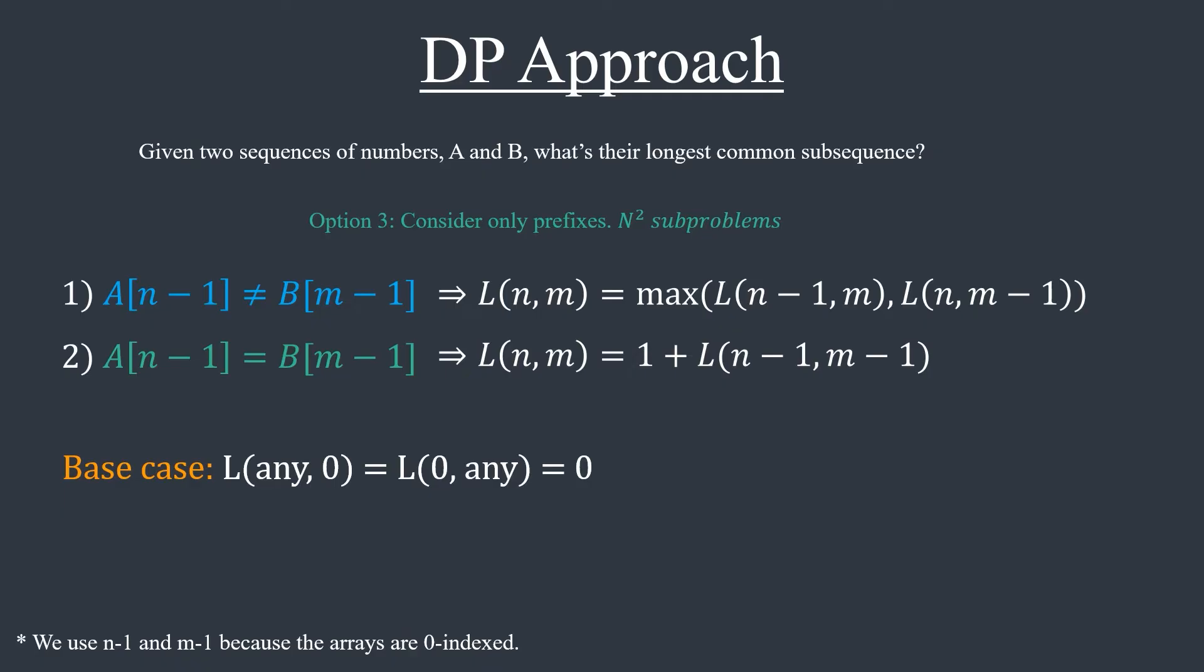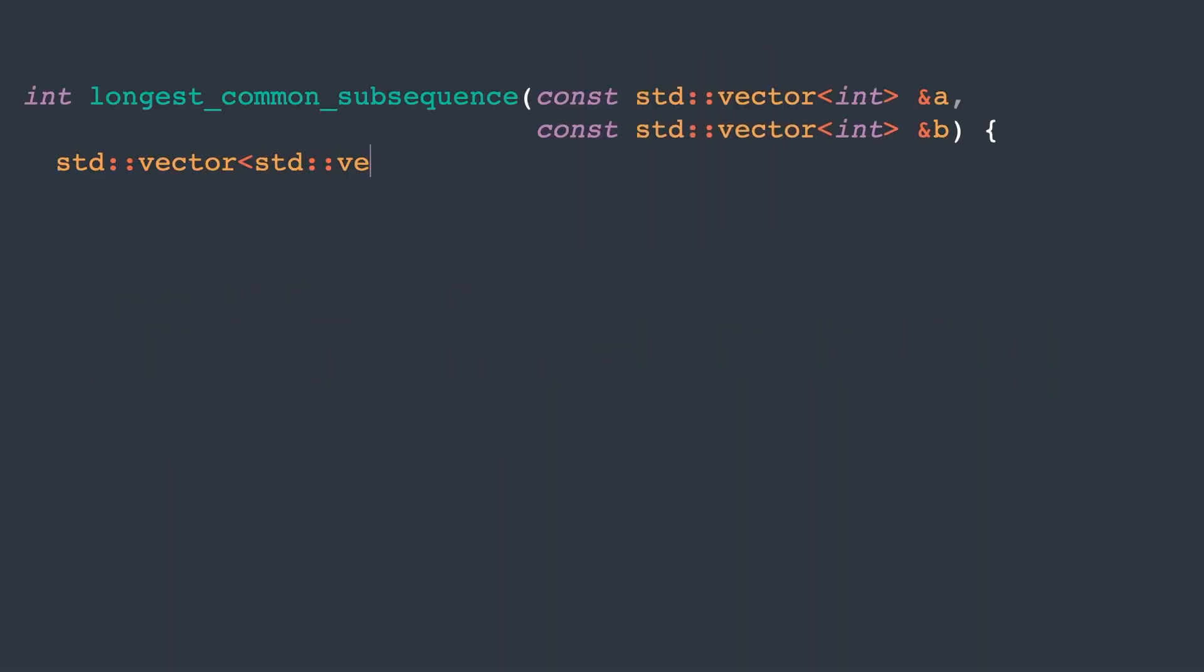Let's implement the solution. I'll use C++ for this example. First, we initialize the two-dimensional array and set each element to zero. This will cover our base case. I'm calling this dp, but it corresponds to the function L. Note that we need one extra element in each dimension, because we need to represent empty prefixes.